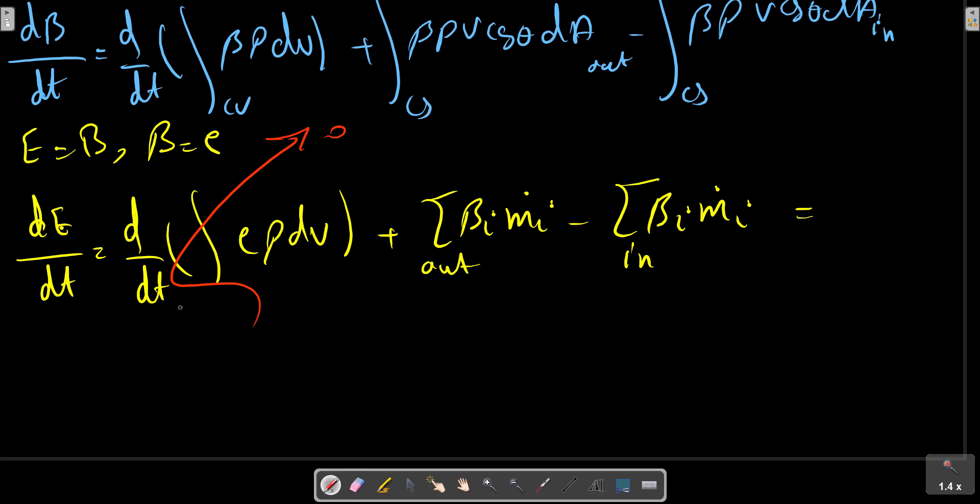This term equals to zero because we have steady flow in this problem. The time derivative volume integral term is zero, and we can simplify the relation as...